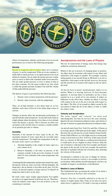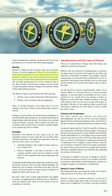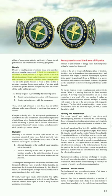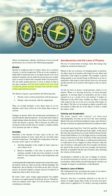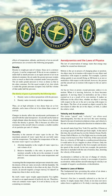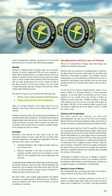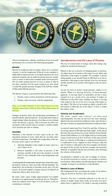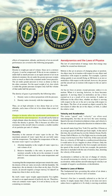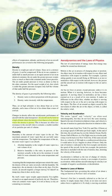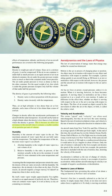Density is weight per unit of volume. Since air is a mixture of gases, it can be compressed. If the air in one container is under half as much pressure as an equal amount of air in an identical container, the air under the greater pressure weighs twice as much and is twice as dense. The density of gases is governed by two rules: density varies in direct proportion with the pressure, and density varies inversely with the temperature. Thus, air at high altitudes is less dense than air at low altitudes, and hot air is less dense than cool air. Changes in density affect the aerodynamic performance of aircraft. An aircraft can fly faster at a high altitude, where density is low, than at a low altitude, where density is greater, because air offers less resistance when it contains a smaller number of air particles per unit of volume.